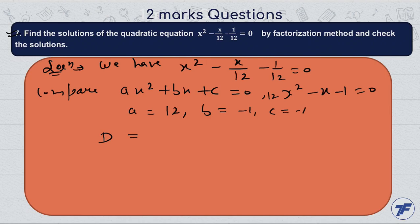We can find if it's possible using b² - 4ac. That's (-1)² - 4(12)(-1), which equals 1 + 48 = 49. Since 49 is greater than 0, this quadratic equation has real roots.